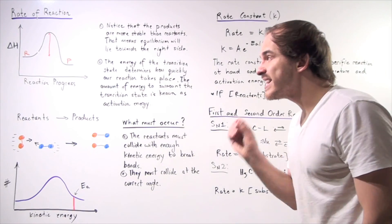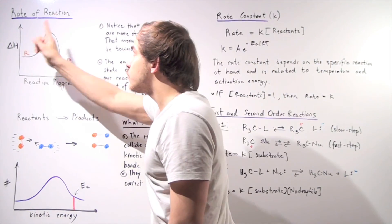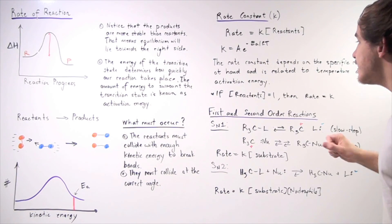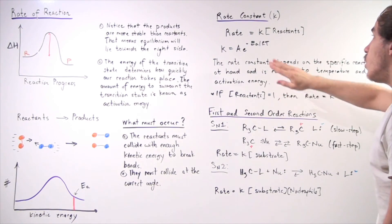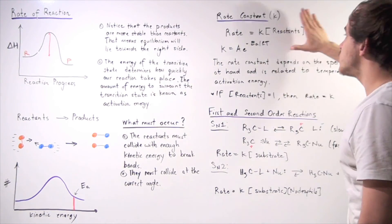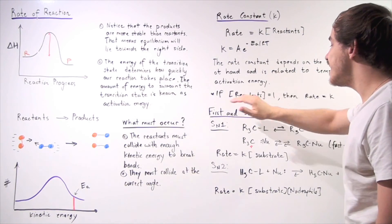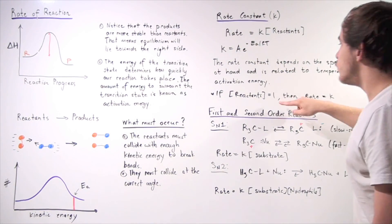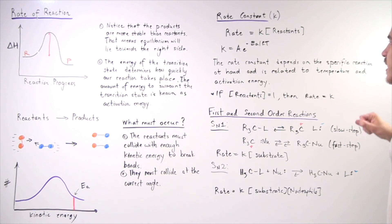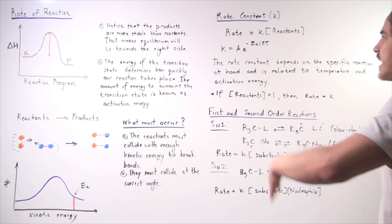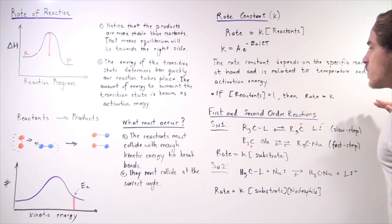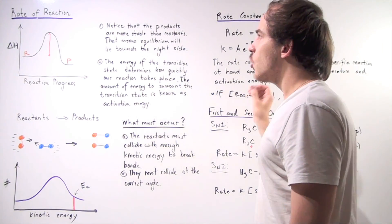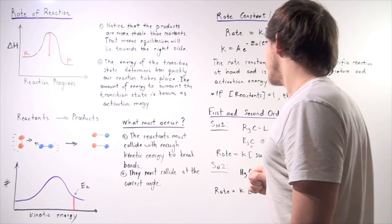The only time that our rate of reaction will actually equal the rate constant is when the concentration of all the reactants in the rate law equals one. So if this is a first-order reaction and reactant concentration is one, we plug in one and get rate equals K.